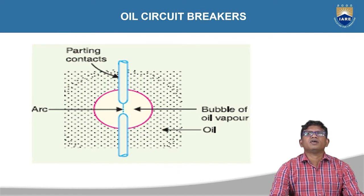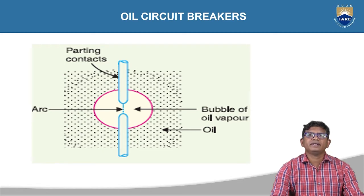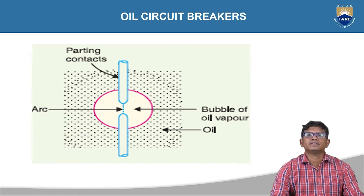This is the general operation of the oil circuit breaker. The vertical lines represent the parting contacts — the fixed contact and moving contact of the breaker. The bubbles represent the arc, and the dots represent oil. The two contacts are operating in the oil.